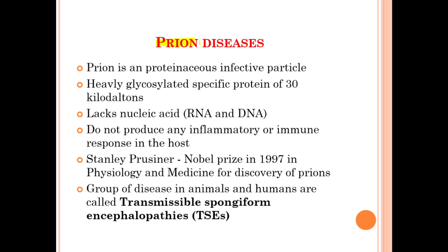The first question arises: what are prions? Simply, prions are proteinaceous infective particles — heavily glycosylated specific proteins of 30 kilodaltons weight. They lack nucleic acid, meaning they don't have RNA or DNA. They do not produce any kind of inflammatory or immune responses in the host. Stanley Prusiner won the Nobel Prize in 1997 in physiology and medicine for the discovery of prions.